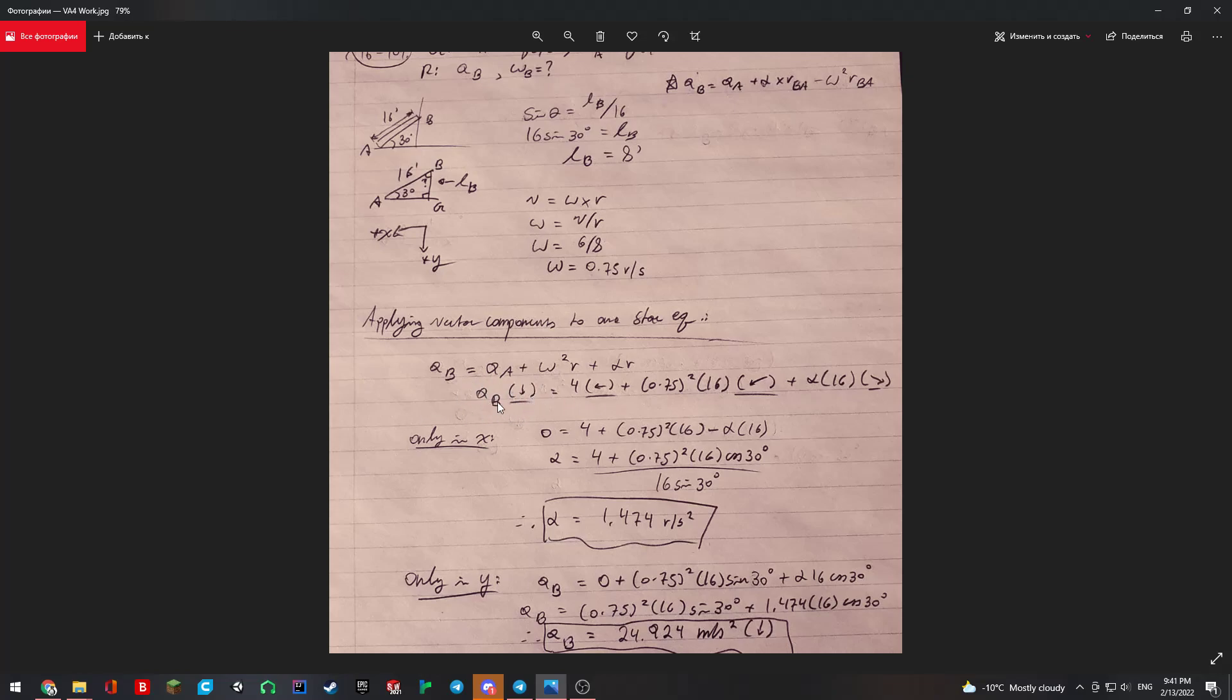We solve for alpha. We know that alpha, after doing some basic trig and simplification, becomes 1.474 rads per second squared.